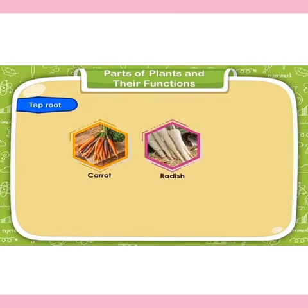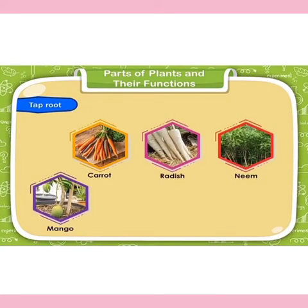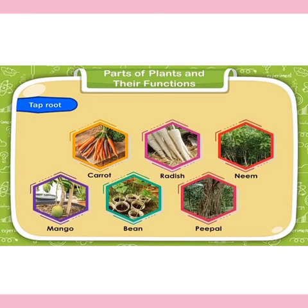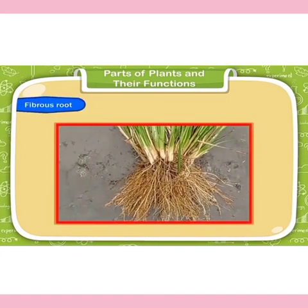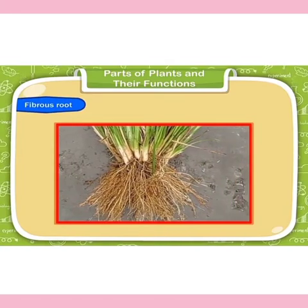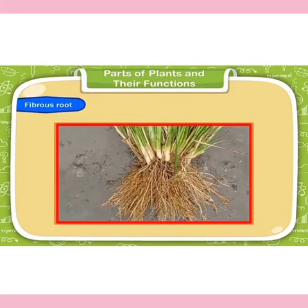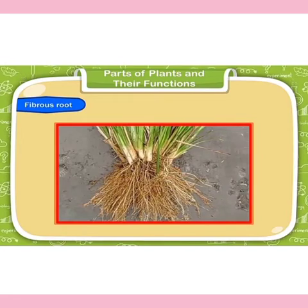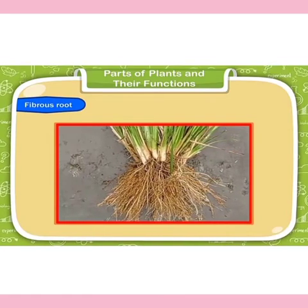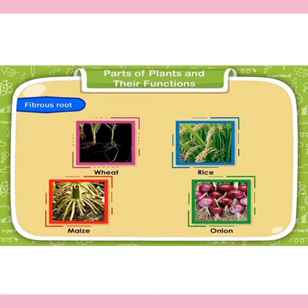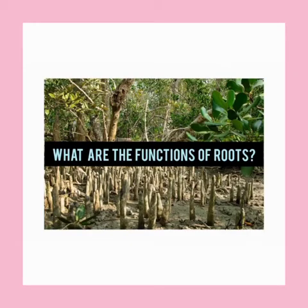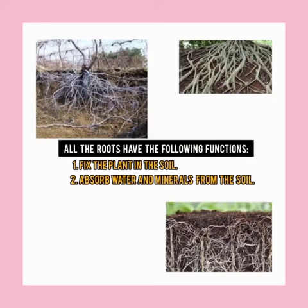Plants like carrot, radish, neem, mango, bean, and peepal have taproots. Fibrous roots have no main root — many tiny thin roots grow like a bunch below the stem, spreading out in the soil. Plants like wheat, rice, maize, and onion have fibrous roots.